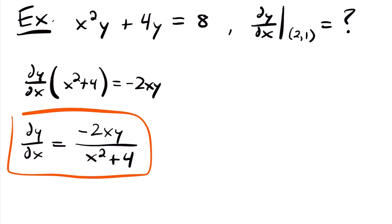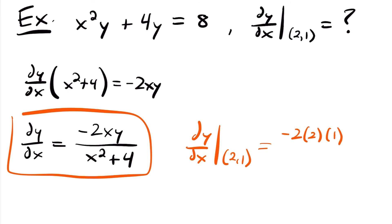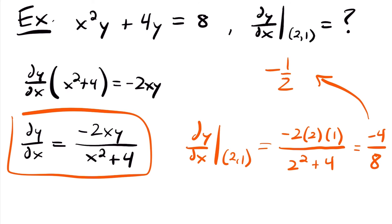However, we still need to find the value of the derivative at the point (2, 1). We plug in x equals 2 and y equals 1: dy/dx equals negative 2 times 2 times 1, divided by 2 squared plus 4. That gives negative 4 divided by 4 plus 4, which is negative 4 over 8, which simplifies to negative 1/2. So the slope of the function at the point (2, 1) is negative 1/2.